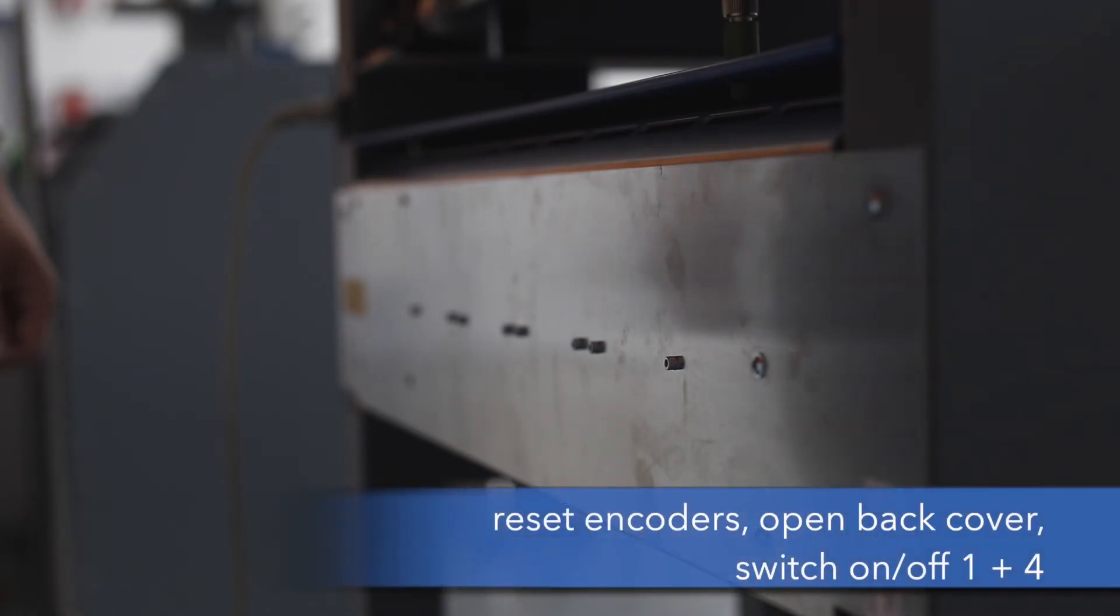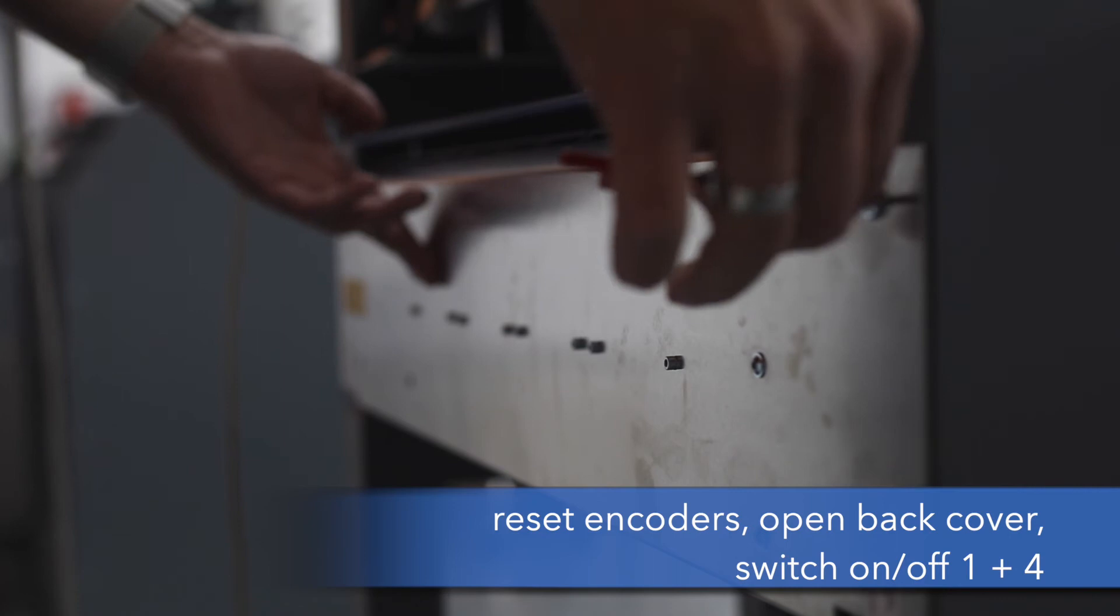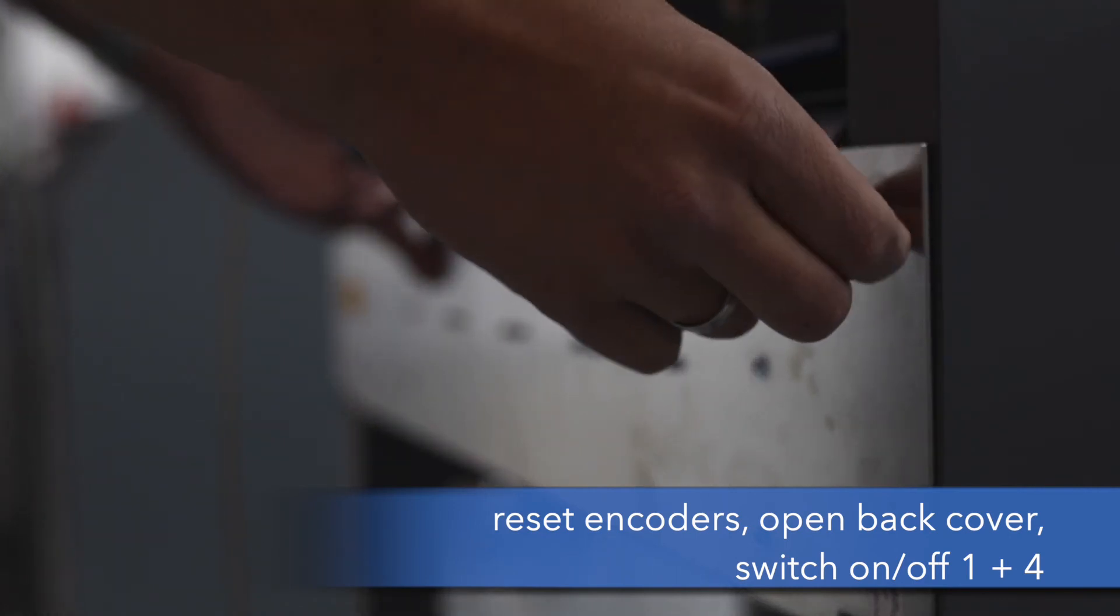To reset the encoders we need to open the back side of the machine to get to the MCP31. Therefore we need to open the two screws.